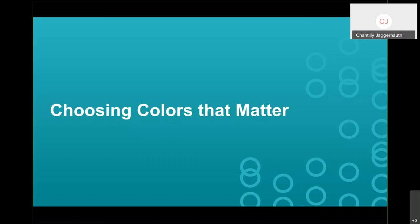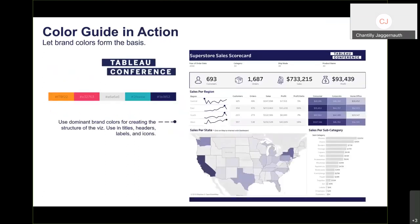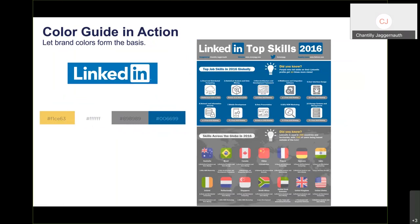Now let's talk about choosing colors that matter. First, let your brand colors form the basis. For the Tableau Conference, we received their color palette and used that purple and light gray as the dominant colors — purple for headers, titles, and shading. For a LinkedIn visualization, I used the LinkedIn blue, white, and gray. For the Women's March visualization, I used the brand icon's colors to form all colors on the dashboard.